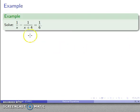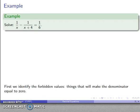So for example, let's take a look. Solve 1 over x minus 1 over x plus 4 equals 1 over 6. And so the first thing to do is we want to identify the forbidden values, things that will make a denominator equal to zero. So here I see I have denominator x, so I know that x can't be allowed to be zero. I have denominator x plus 4, so that says x can't be allowed to be negative 4. Denominator 6 is never going to be equal to zero, so I don't have to worry about that.